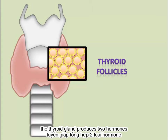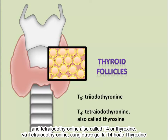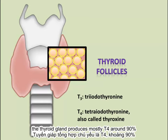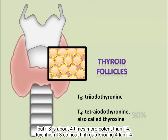The thyroid gland produces two hormones: triiodothyronine, referred to as T3, and tetraiodothyronine, also called T4 or thyroxine. The thyroid gland produces mostly T4, around 90%, but T3 is about four times more potent than T4.